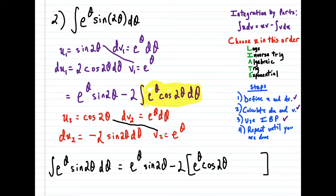And now we have minus the integral of v du. So we're going to multiply v times du — that's these two terms here. So notice we have minus, and now we have a negative 2 attached to sine 2θ dθ. That negative 2 is a constant that could come out in front of the integral.